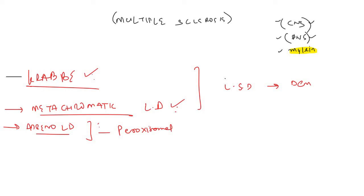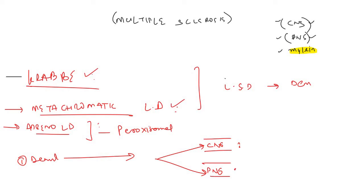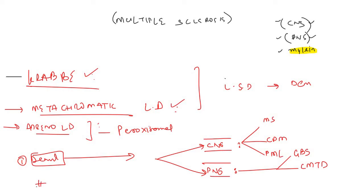To summarize: demyelinating disorders are those in which there is destruction of the myelin. In the CNS, we have multiple sclerosis, central pontine myelinolysis, and progressive multifocal leukoencephalopathy. In the PNS, we have Guillain-Barré syndrome and Charcot-Marie-Tooth disease. Miscellaneous disorders include Krabbe's disease, metachromatic leukodystrophy, and adrenoleukodystrophy — all causing demyelination.